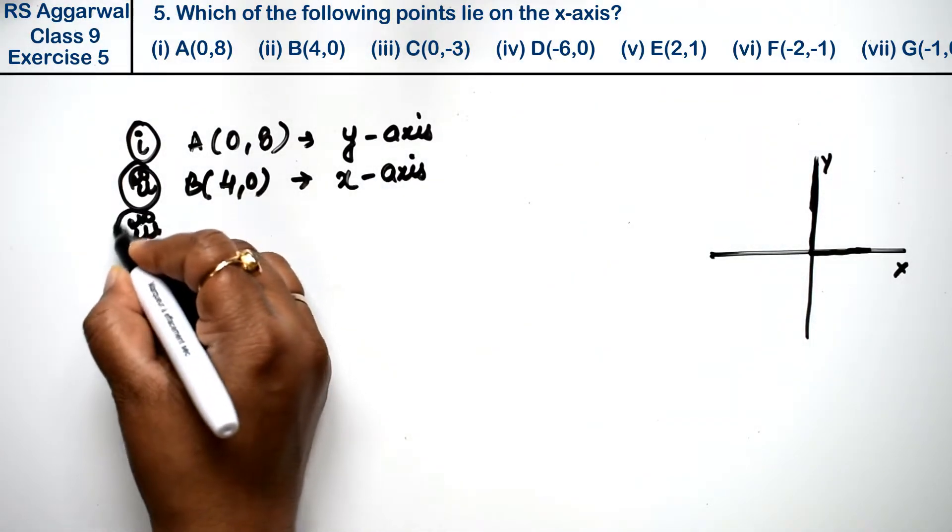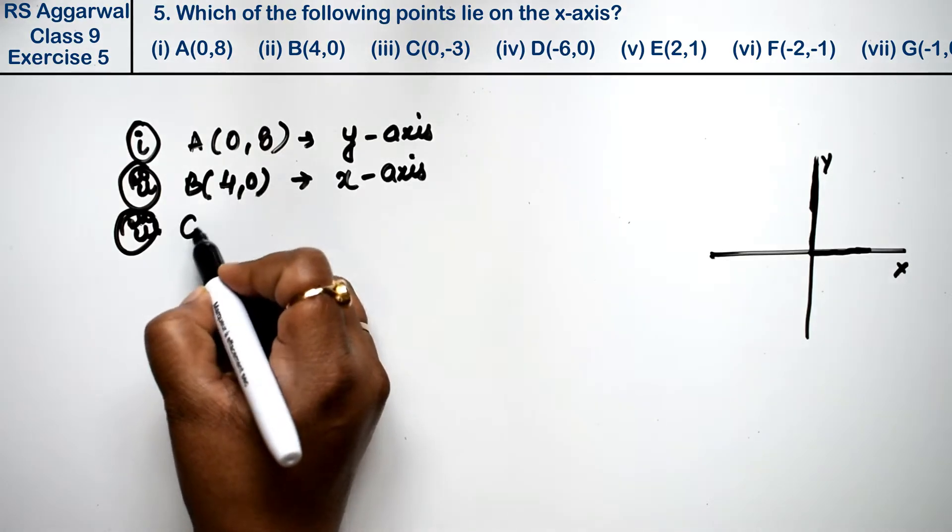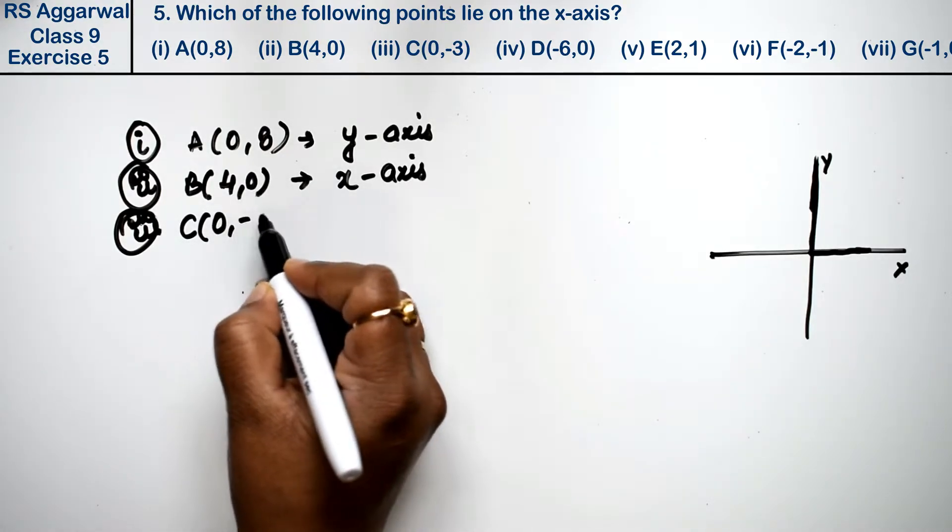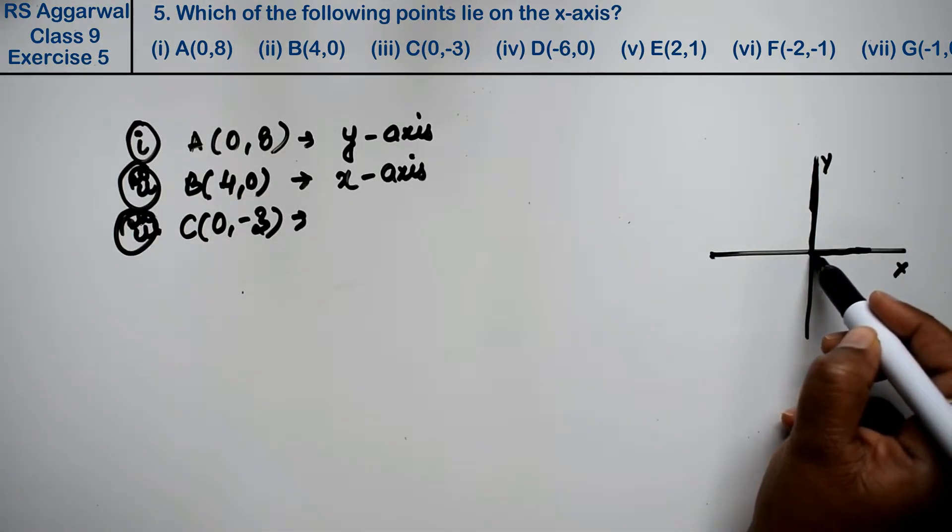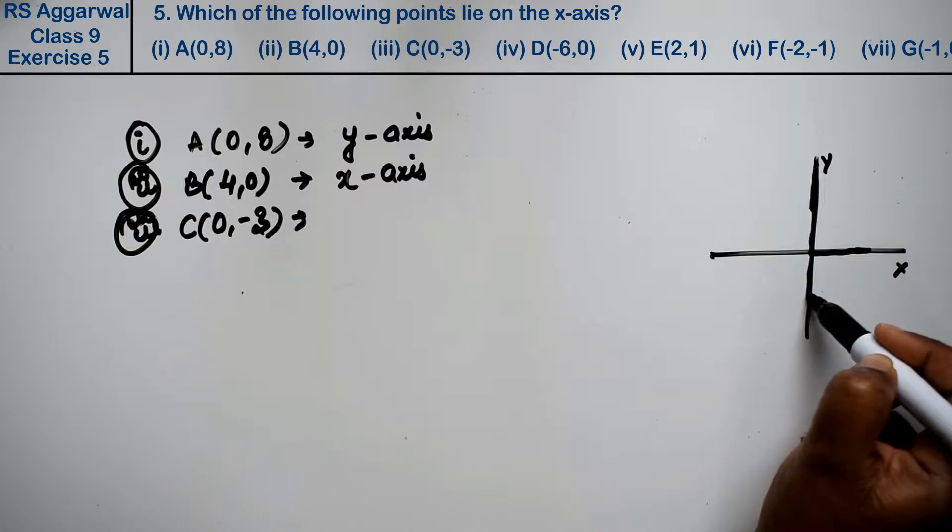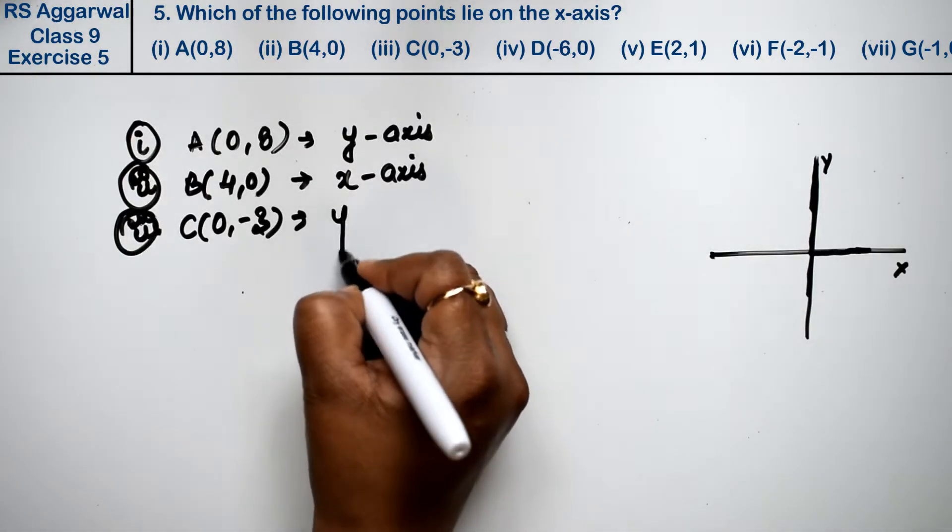Let's do third part. Third part is C(0,-3). So x is 0. So that means this is on the y-axis.